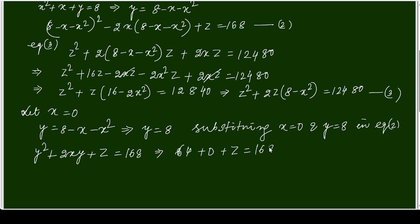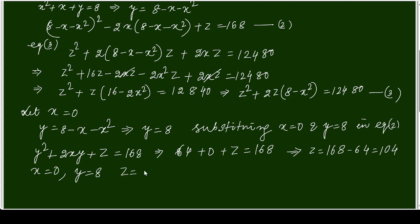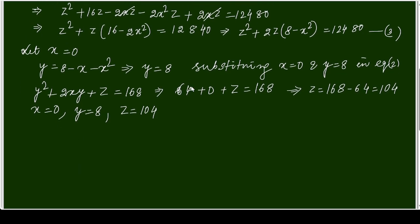That means z = 168 − 64 = 104. So by this method I am getting the candidate x = 0, y = 8, z = 104. But unless these three values satisfy the third equation they are not the solution, so I will substitute them into equation 3.